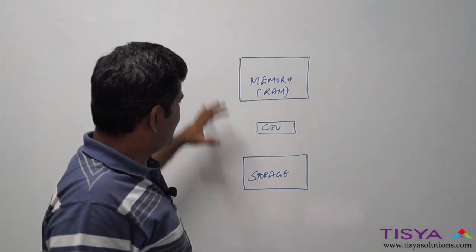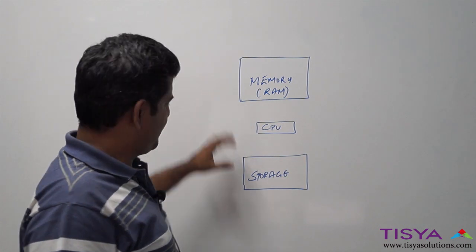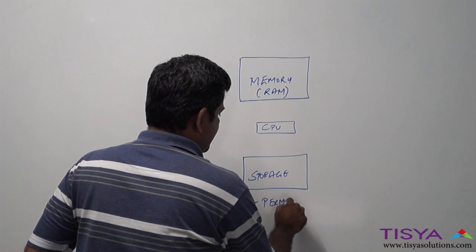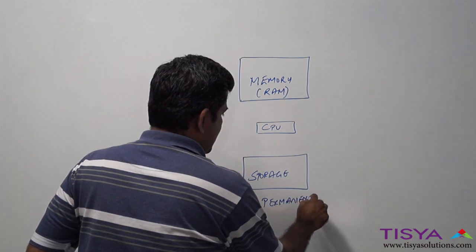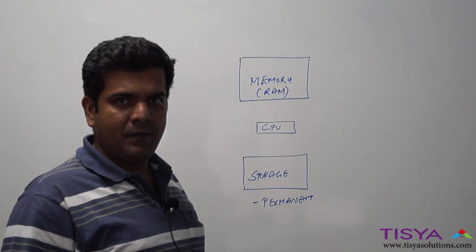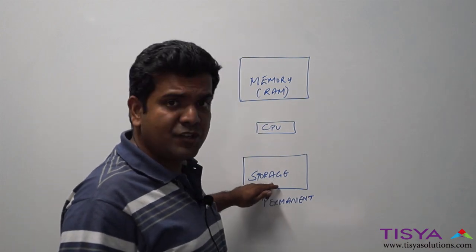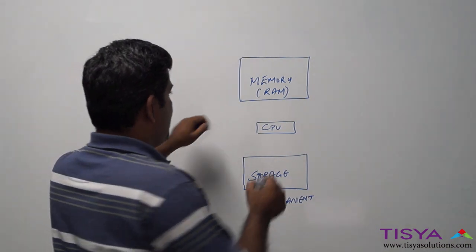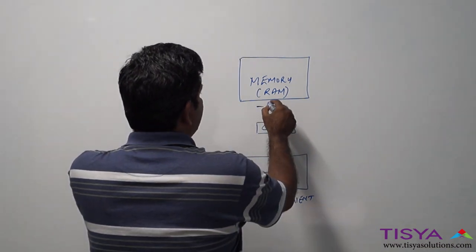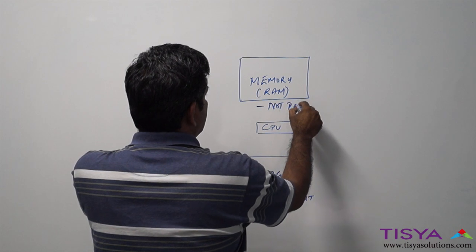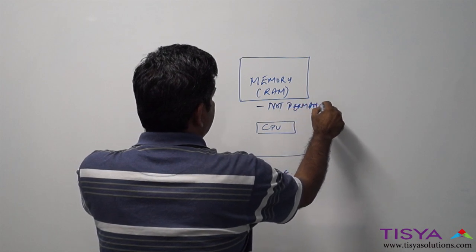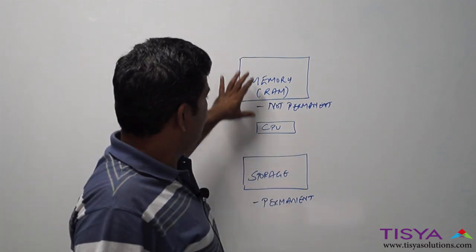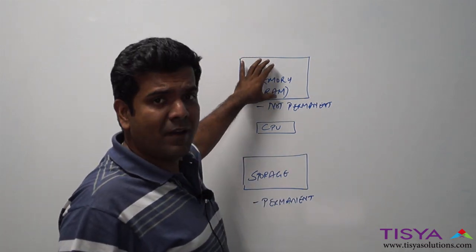What is the significant difference between these three? Storage is permanent, which means when you restart a computer, whatever is stored inside the storage is available even after the reboot. Memory is not permanent, which means when you restart a computer, the contents in the RAM are going to be flushed out.